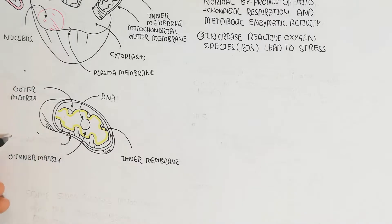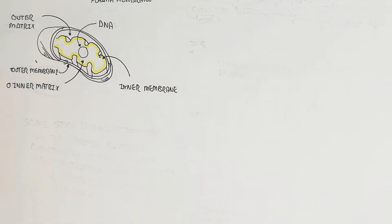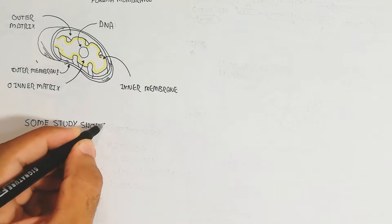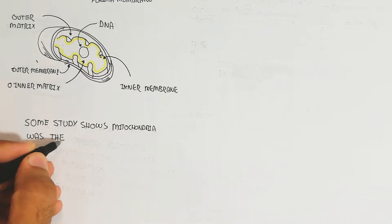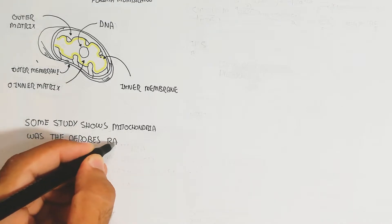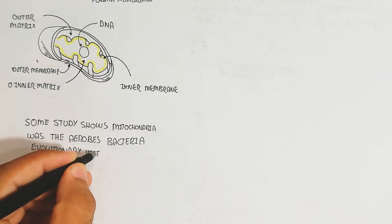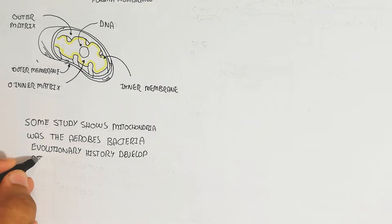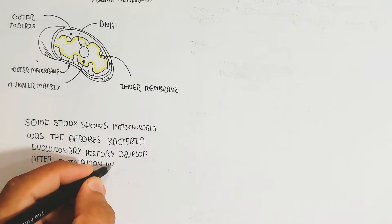The inner matrix and outer matrix are important structures to understand. Where did mitochondria come from? Some studies show mitochondria were originally aerobic bacteria. Their evolutionary history developed after mutilation — that is, symbiosis — with large anaerobic bacteria.